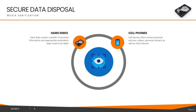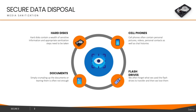Cell phones are a popular commodity that people buy and sell, and they're particularly important because they contain personal pictures, videos, personal contacts, and chat histories. There have been numerous incidents where people were able to recover this kind of information from used cell phones. Simply crumpling up or tearing documents and throwing them in the waste basket is often not enough — you should shred documents before discarding them, though even shredding all fragments together can be dangerous since people have been known to reconstruct shredded documents. Flash drives are also often lost or forgotten while containing sensitive data.